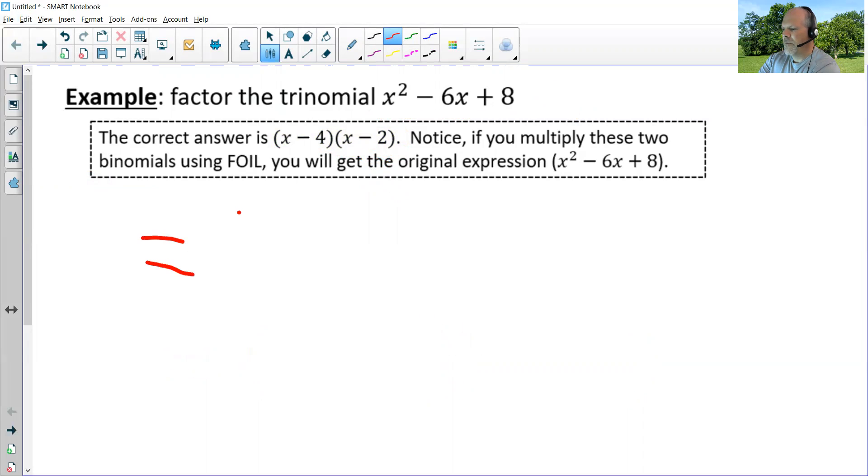We're going to look for a first term times a first term, so in other words think FOIL, that equals the first term in the trinomial. Well, there's only one way we can multiply two things together and have it equal x squared, and that is if those two things are both x's because x times x is x squared.